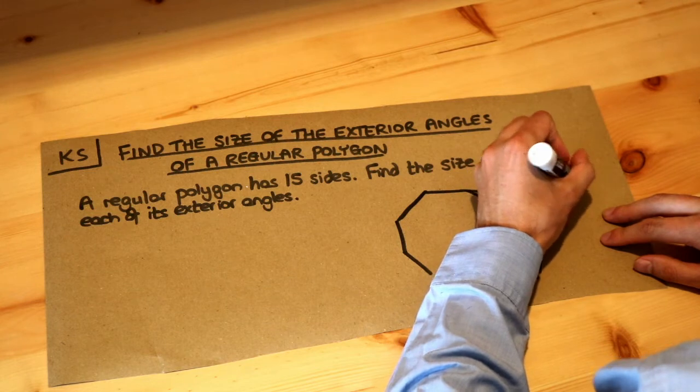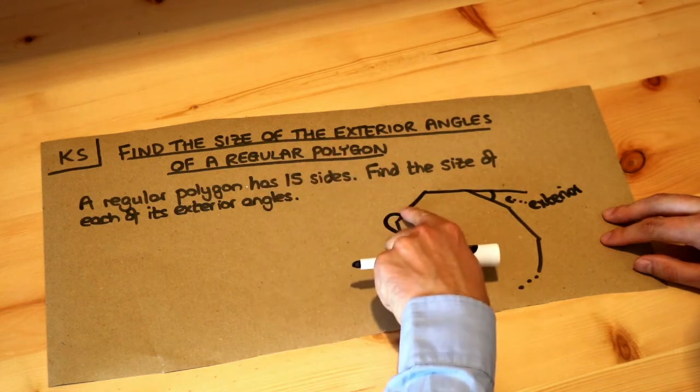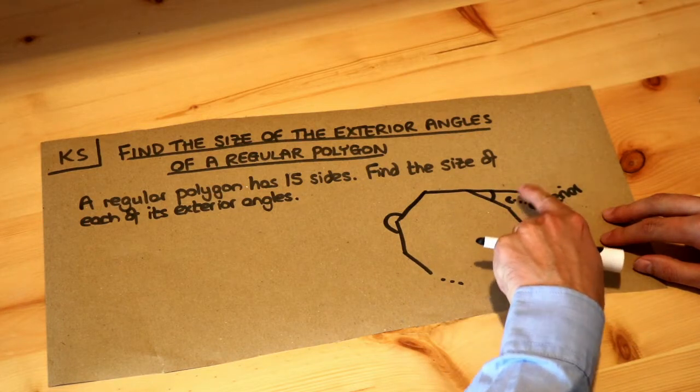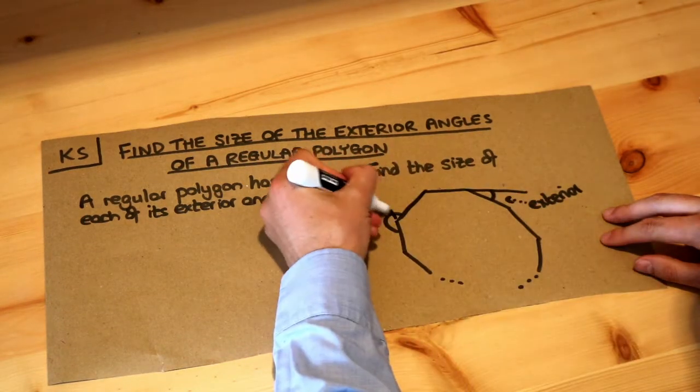The exterior angle is not this angle, it's not the angle outside the polygon, it's the angle between the extended side and another side of the polygon, so let's cross that out.